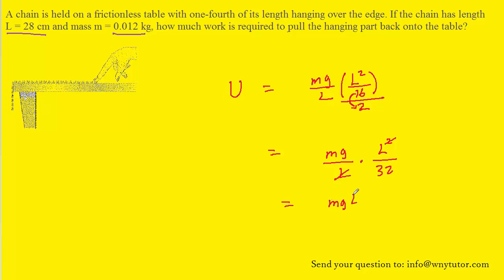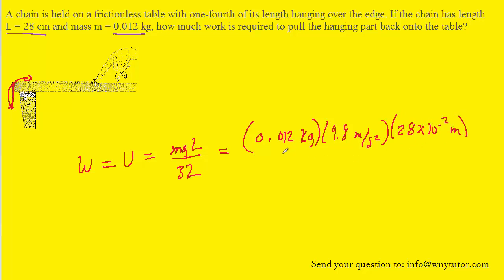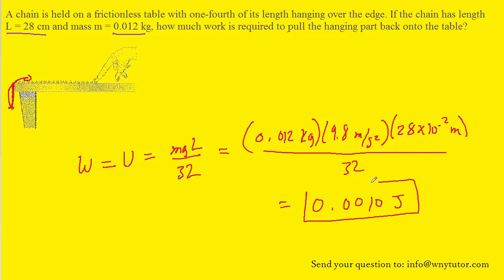MgL over 32 represents the total change in potential energy as we drag that segment of chain from its lower position all the way up to the tabletop. The work done equals that change in potential energy, so the work equals MgL divided by 32. Plugging in the known values: mass is in kilograms, g is 9.8 meters per second squared, and the length is 28 centimeters — convert to meters by multiplying by 10 to the minus 2. Divide by 32, and you get approximately 0.0010 joules.